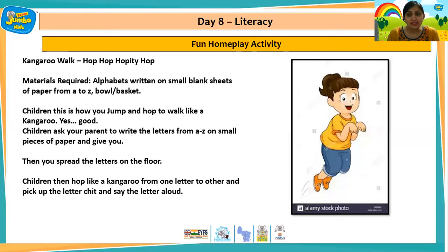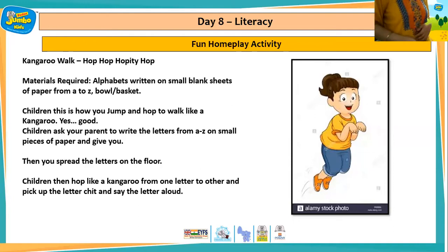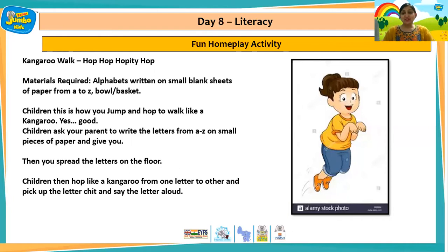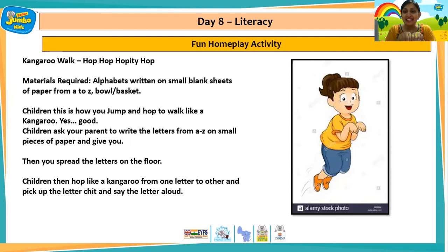Children, for this home play activity, the name of this activity is Hop, Hop, Hoppity Hop. And for this activity, we all have to hop like a kangaroo. So let's all stand up and hop like a kangaroo. We all have to pretend to be a kangaroo and hop and jump like a kangaroo. Wasn't that kangaroo hop super fun children? Yes! This is how you walk and hop like a kangaroo. You can ask your parents to write the letters from A to Z on small pieces of paper. Then you spread the letters on the floor, hop like a kangaroo from one letter to the other, pick up the letter, and say the letter aloud. You can also ask your mama or papa to click a photo or video of you doing this activity and post it on our Center FB page.